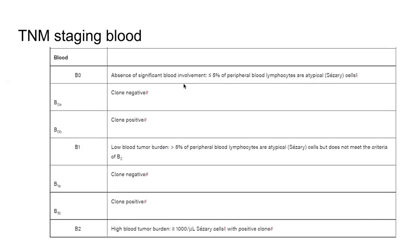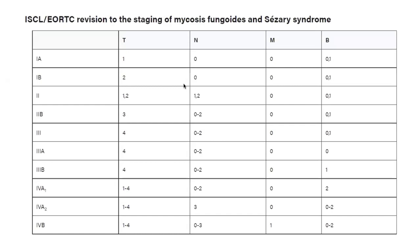In addition to the standard TNM system, there is a B stage referring to blood involvement. B0 is minimal blood involvement; B1 is low tumor burden — greater than 5 percent atypical Sézary cells but not meeting B2 criteria; B2 is high tumor burden defined as ≥1000 Sézary cells per microliter with a positive clone. The TNMB staging system is another way to define stage, and it can be equated to the other staging system via a conversion table.